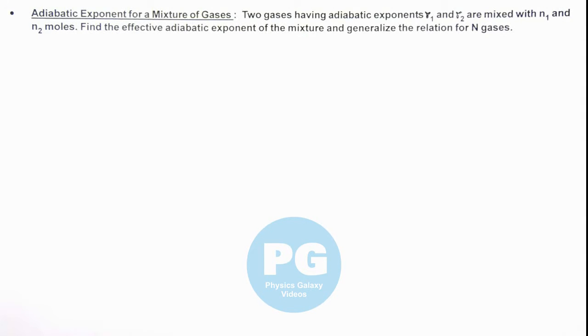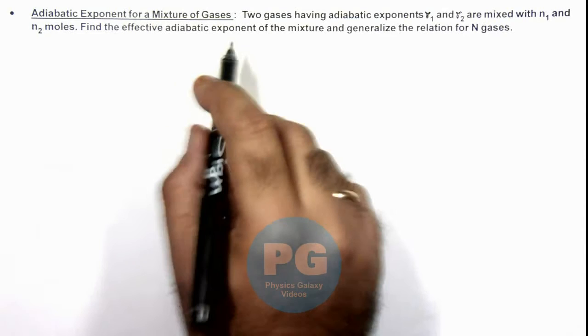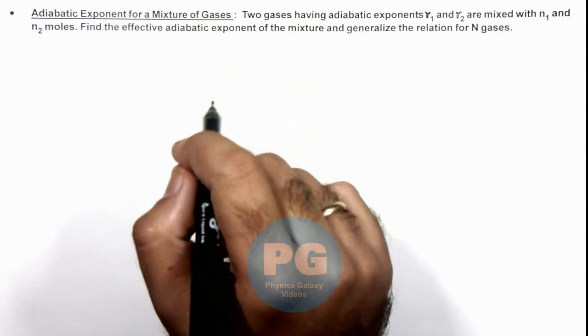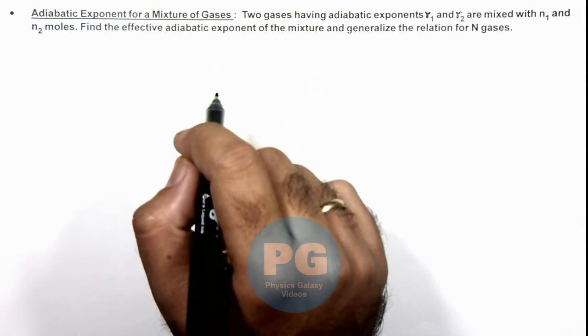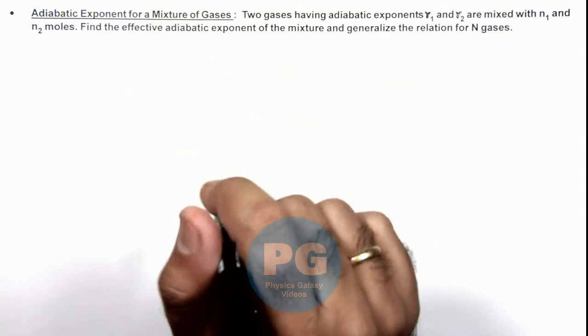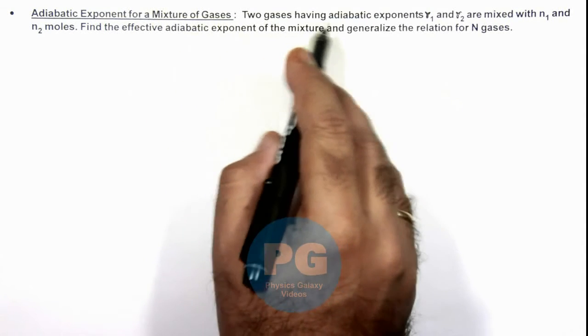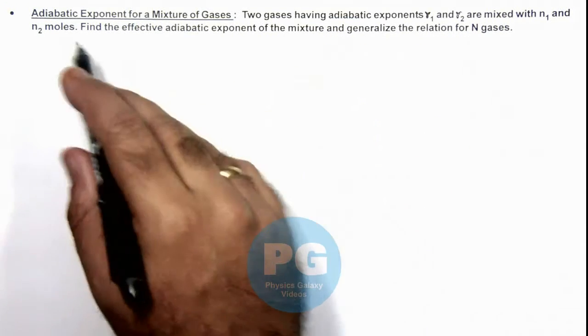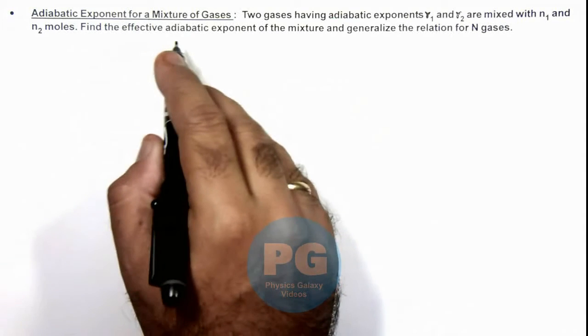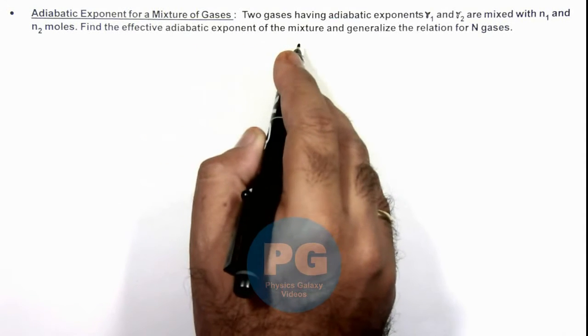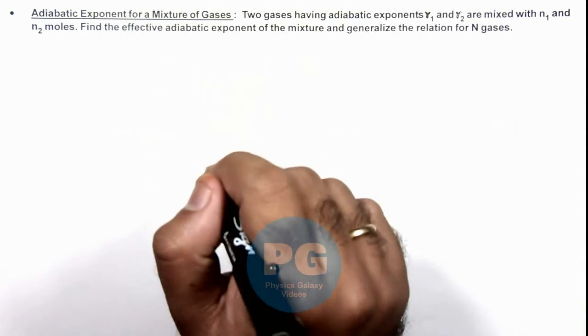This illustration is about adiabatic exponent for a mixture of gases, a concept which we have already studied in concept videos. Here we are analyzing a similar thing. We are given two gases having adiabatic exponents gamma 1 and gamma 2 mixed with n1 and n2 moles. We are required to find the effective adiabatic exponent of the mixture and generalize the relation for n gases.